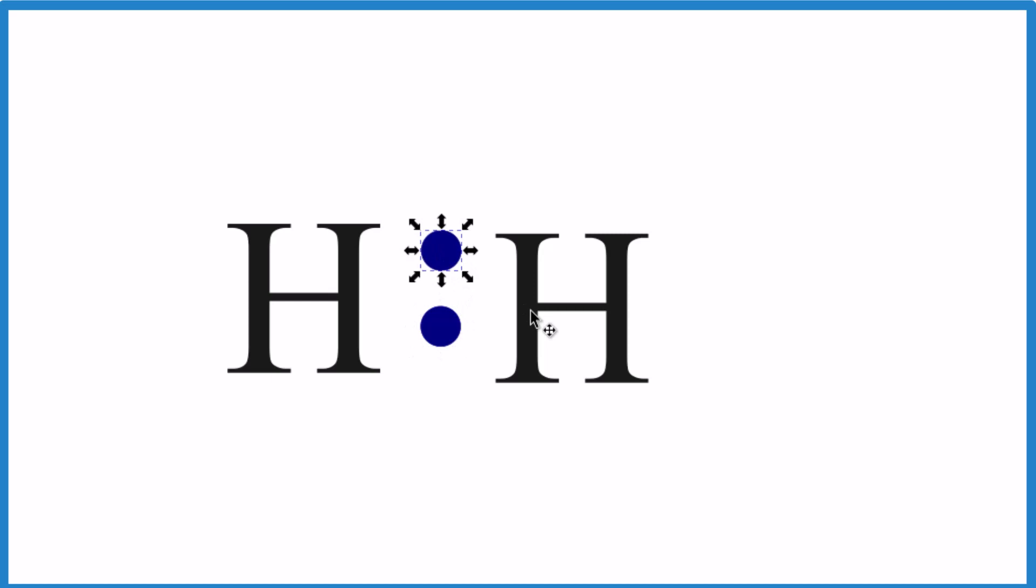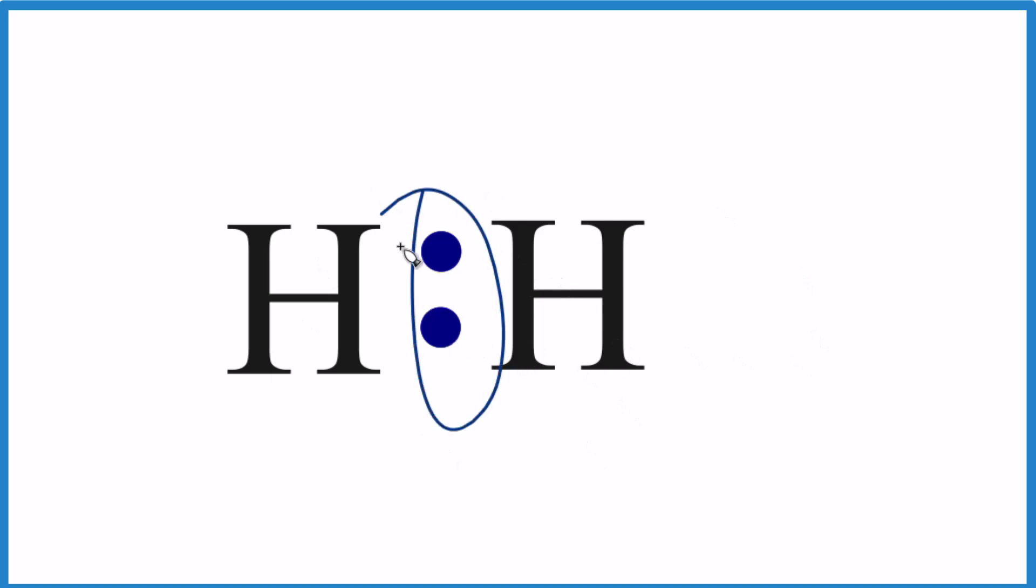And they share it, and now we have a covalent bond. This hydrogen has 2, and this hydrogen has 2. So hydrogen, we get H2, and it's very stable because it's sharing these electrons, and it's like each one of them has 2.